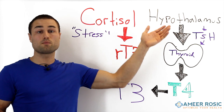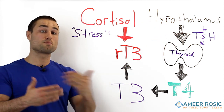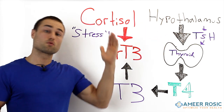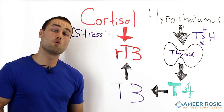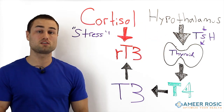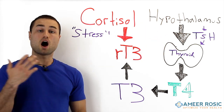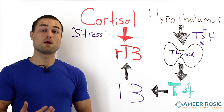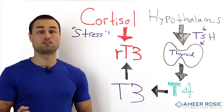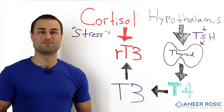When cortisol reverses T3 to RT3, your hypothalamus doesn't compute properly with the rest of your body. With this information, we can really optimize and help your body maximize your metabolism.